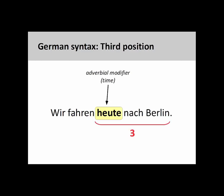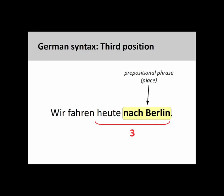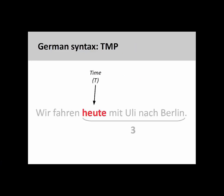In the third position, we can see 'heute' — 'today' — acting as an adverbial time modifier, as well as the dative prepositional phrase 'nach Berlin' — 'to Berlin' — describing the place to where the subject is driving. In a German sentence, elements in the third position are arranged according to time, manner, and place. This is known as the TMP rule.